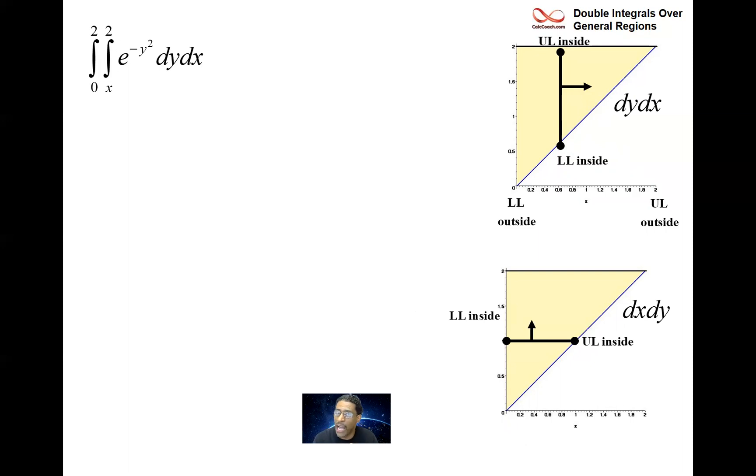Now we're doing it dx dy so the functions have to have equation x equals and x equals. This left one here the lower limit inside, that's the y axis, that's called x equals zero. And then this line on the right side, that's the line y equals x, we just have to call it x equals y. And then this thing gets moved vertically upward from zero to two. So we have it.